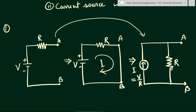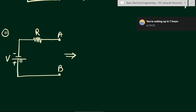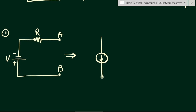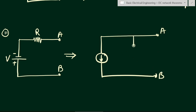Now let us change the polarity of this voltage — we have plus at the bottom and minus at the top, because the longer line is at the downward direction. The equivalent current source circuit will be the same, only the direction will be opposite. The arrow will point in the downward direction. The resistance remains the same, and the current value I is still V/R.